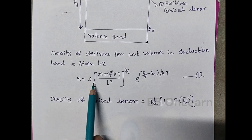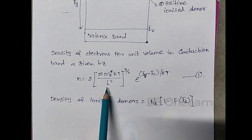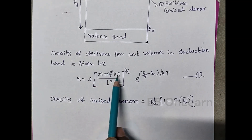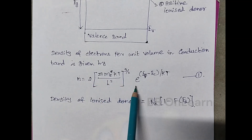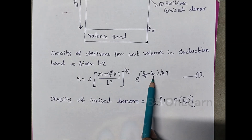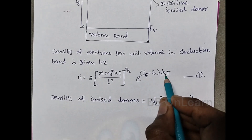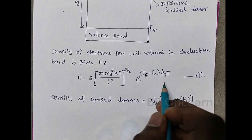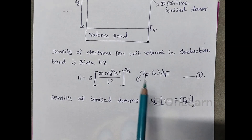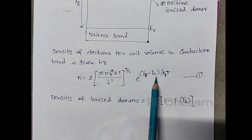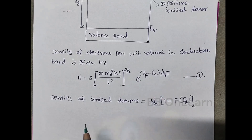So n is equal to 2 times (2π mₑ* kT / h²) to the power 3/2, times e to the power (EF minus EC) divided by kBT. Here EF is the Fermi energy and EC is the conduction band energy level.